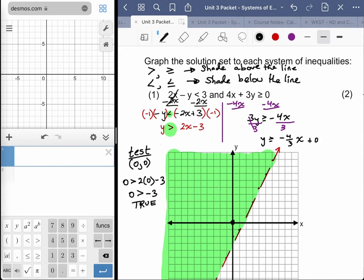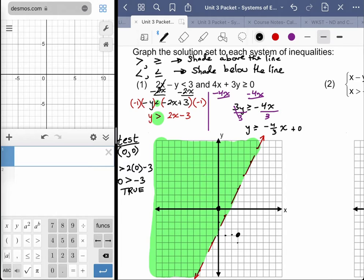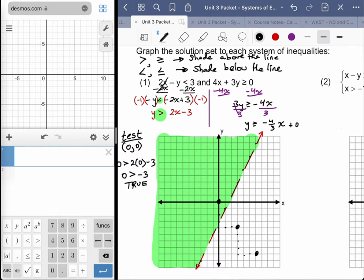So I'd plot a point here. You can go down 1, 2, 3, 4, over to the right 1, 2, 3. Plot a point. Do it again, and then repeat the process until you run out of space. And then when you run out of space, just go in the opposite direction. Now this one gets a solid line because it's a greater than or equal.